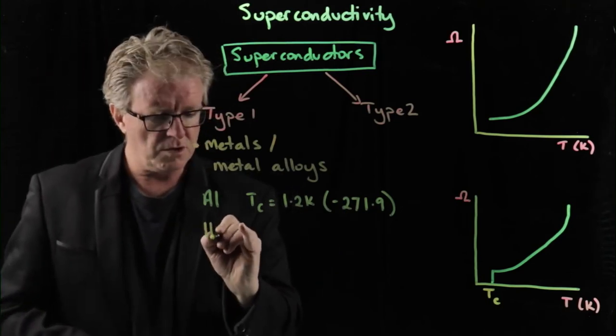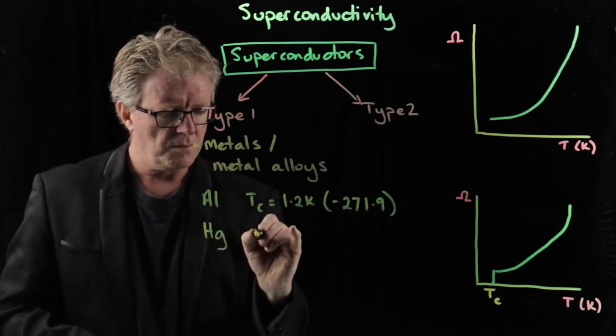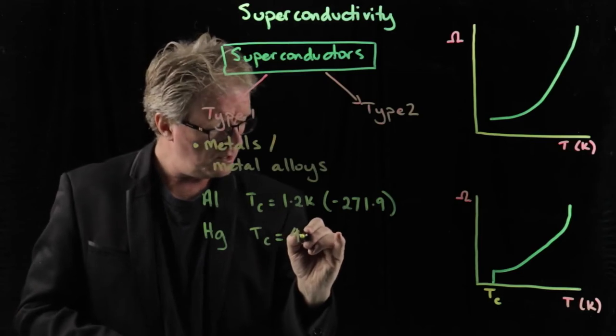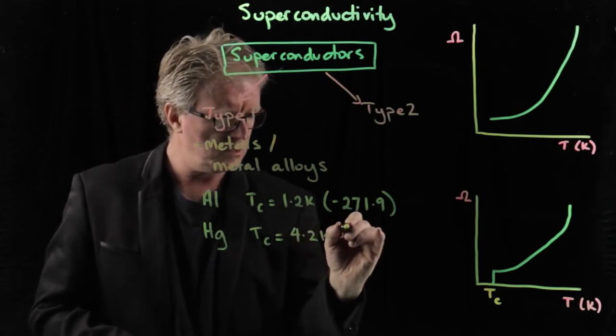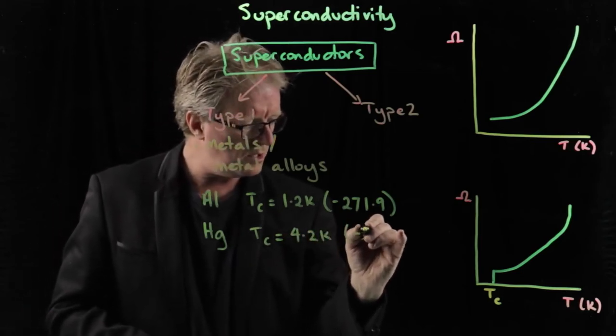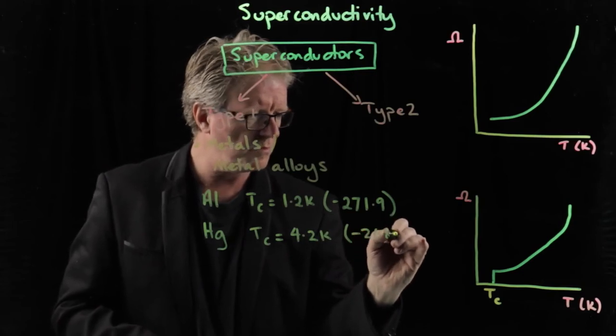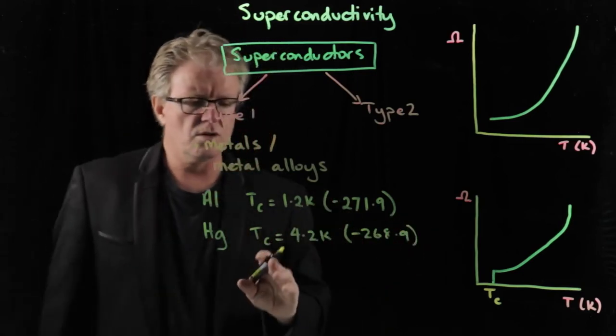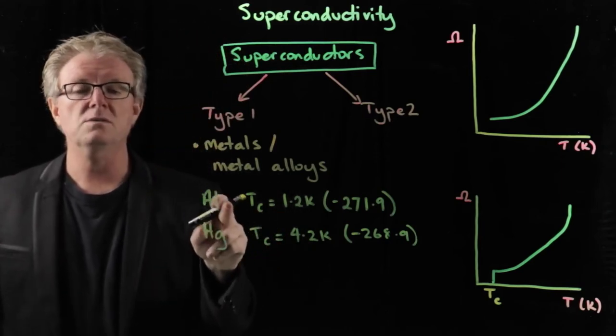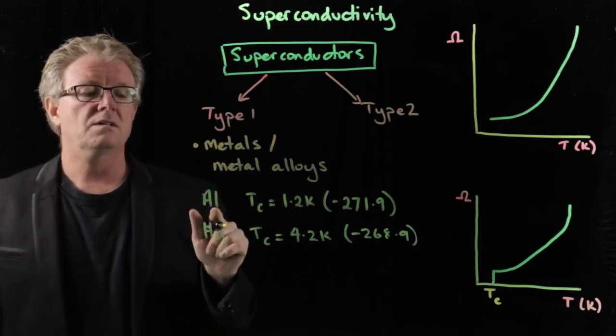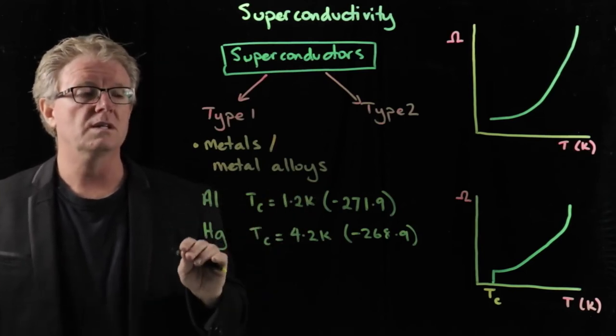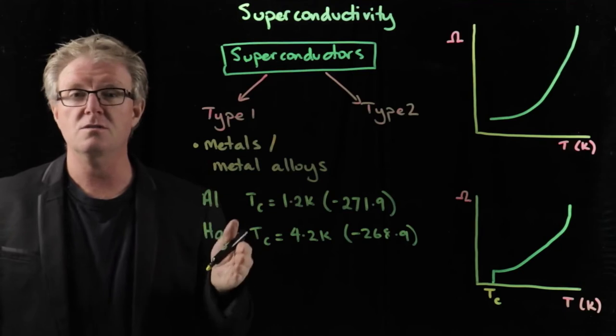Other than aluminum we have mercury. Mercury has a critical temperature of a bit more than that, 2.42 Kelvin, which turns out to be minus 268.9 degrees Celsius. So these are very, very low. So they are metals that exhibit superconductivity. Their critical temperatures are very, very low. Not all metals will exhibit superconductivity. Only certain types.